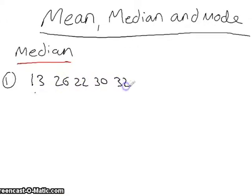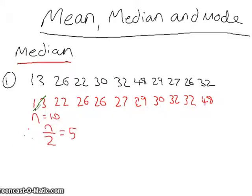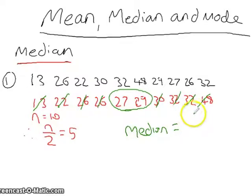So with this second set of data, we arrange them in ascending order. We see that there are 10 values, so we divide 10 by 2 to get 5. However, in this case there is an even number, so we have to use the midpoint between the two values, 27 and 29, which is 28. So the median is 28.